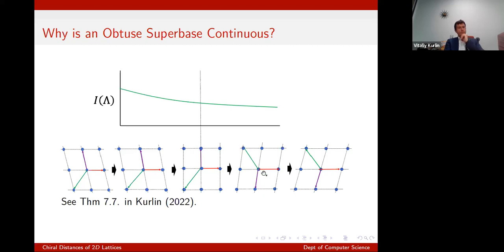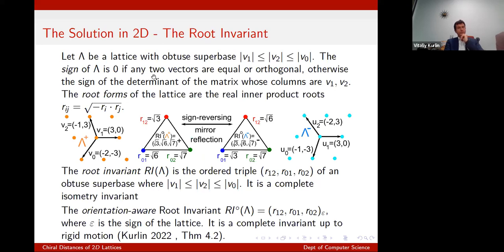Continuity holds for any given pair, and if you derive from that the root invariant — which is just all the inner products, ordered — then that is an isometry invariant of an obtuse superbase. It's an isometry invariant, not a rigid motion invariant, because we have an issue around sign.